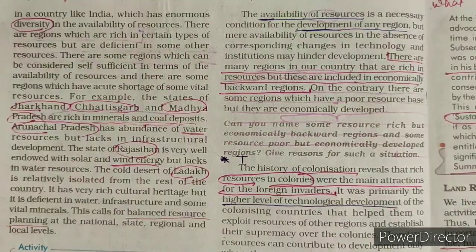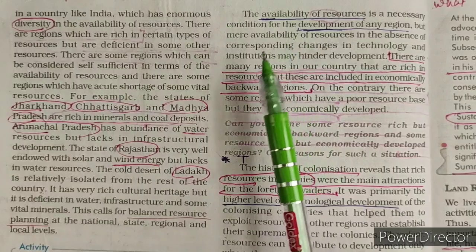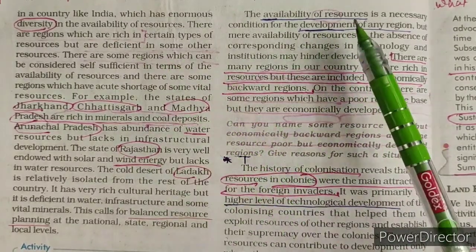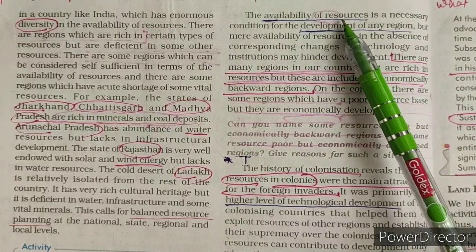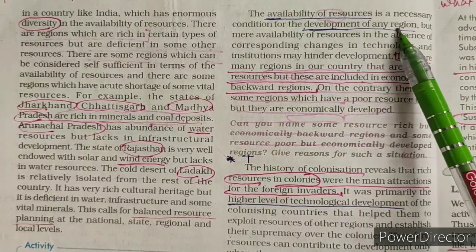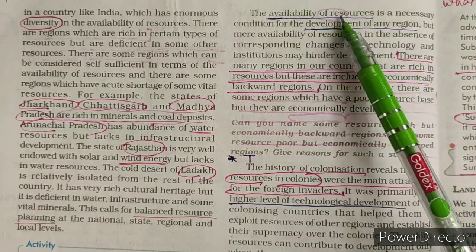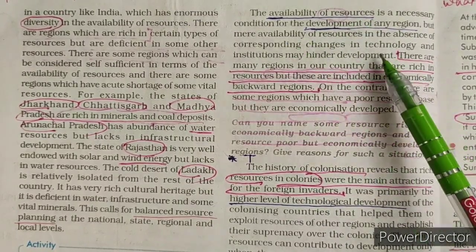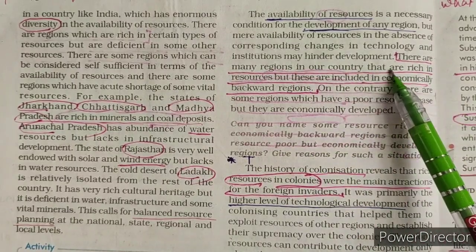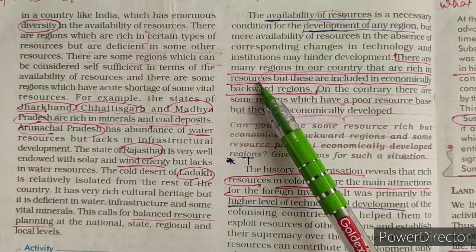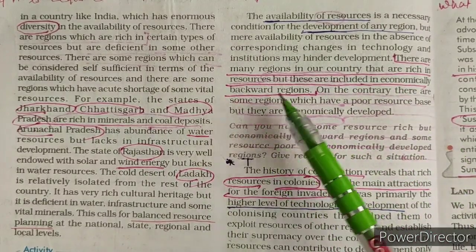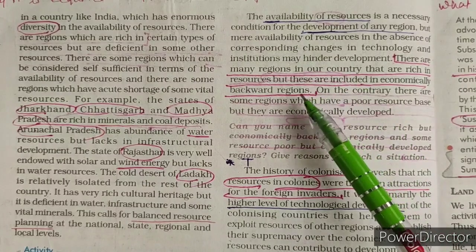For resource planning, only availability of resources is not important. Resources are important for the development of a region, but along with resources we require technology and institutions. For the development of any country or region, resource alone is not enough — we also require technology and quality human resources, i.e., skill. There are many regions in our country rich in resources, like Jharkhand, but that area is economically backward, so we are not able to develop those resources.